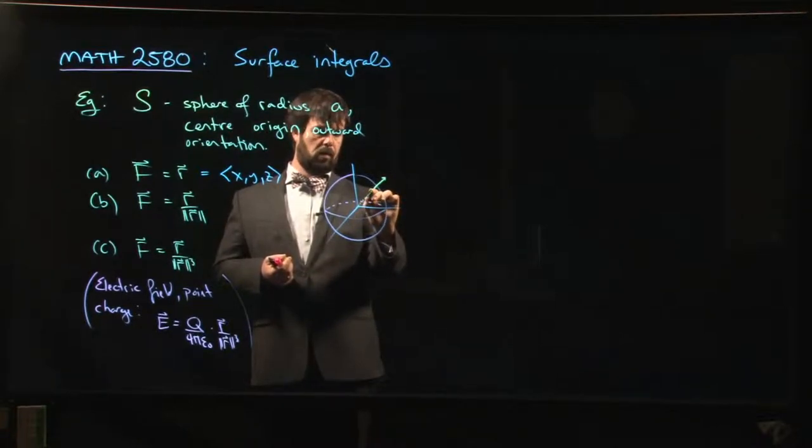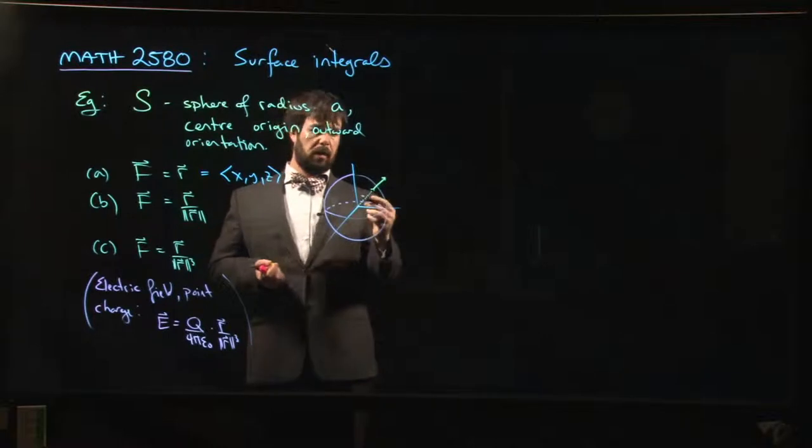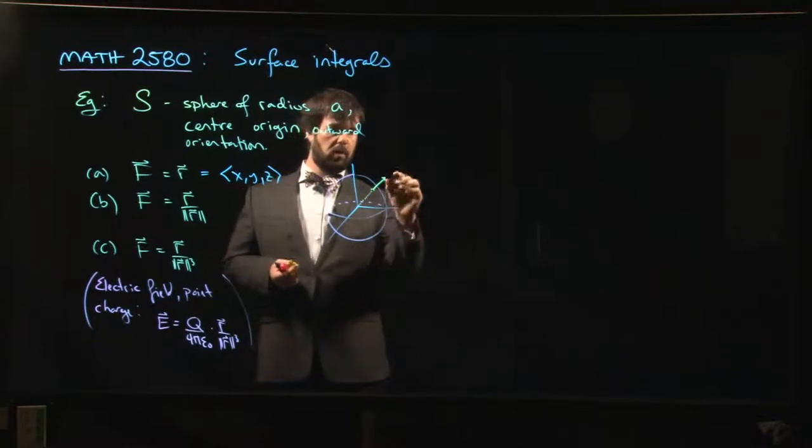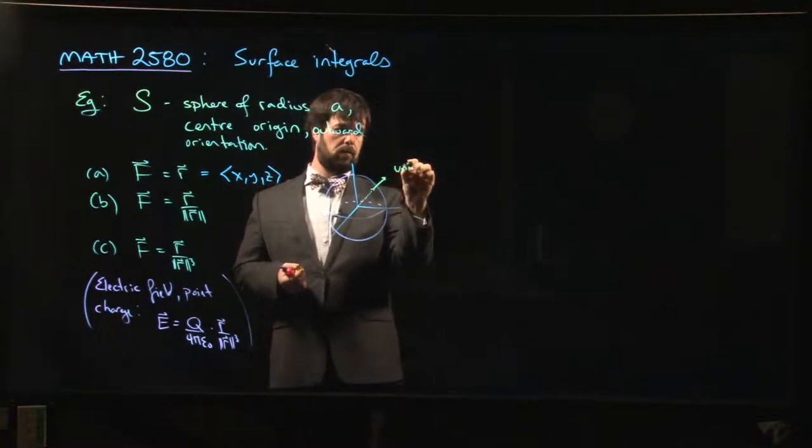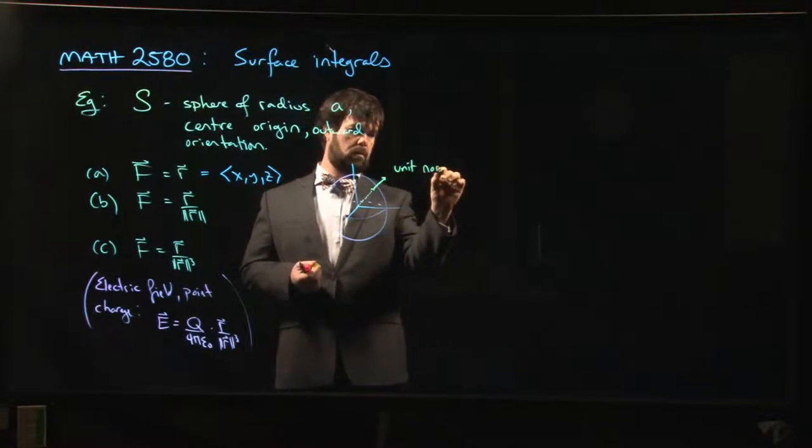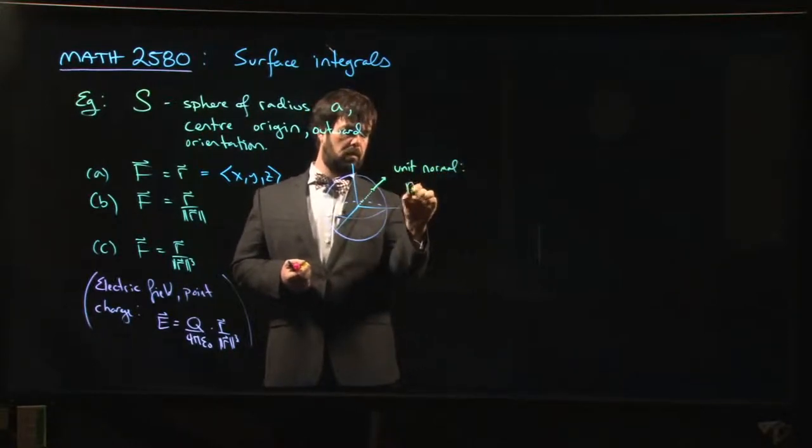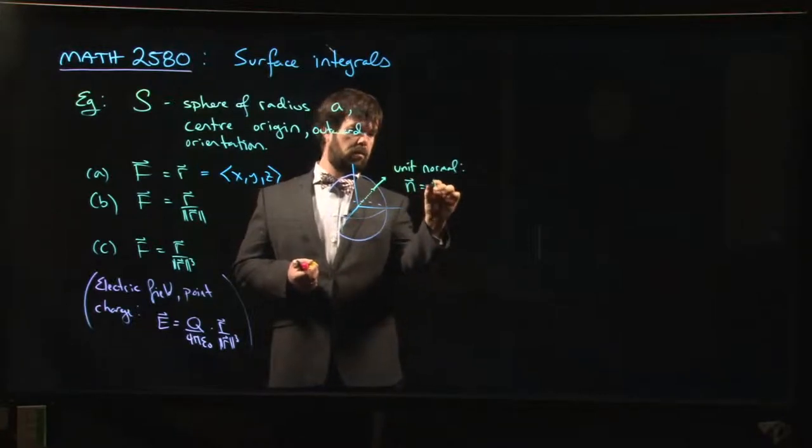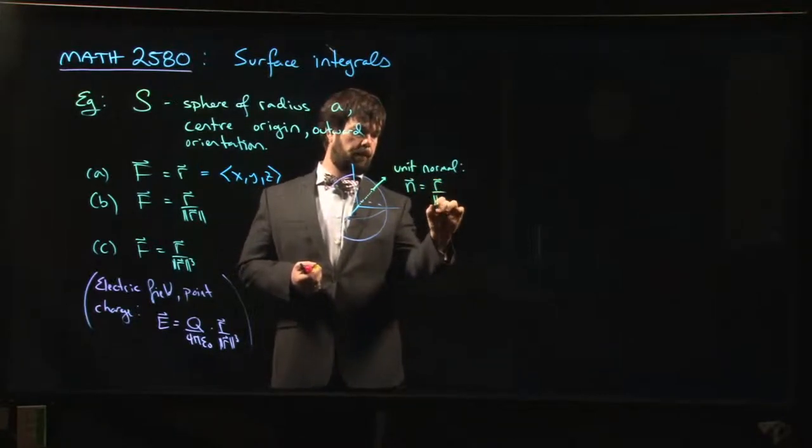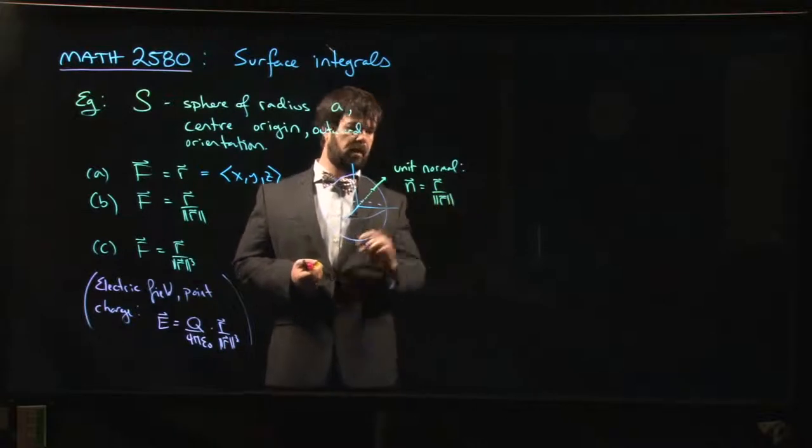pointing from the origin. They're parallel, right? So the unit normal is going to be simply n equals r over the magnitude of r.